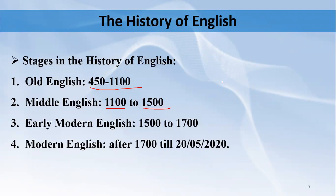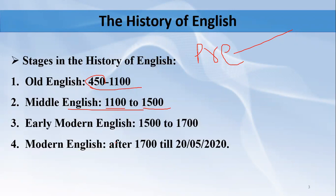If we dig deeper, these stages can be divided into five stages. Stage one is called the prehistoric period — features which existed in the languages from which English later came into being, before 450. Then we have the Old English period, the Middle English period, and the Modern English period, which can be further divided into two stages: from 1500 to 1800, and from 1800 till today.